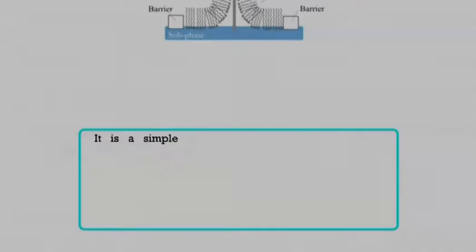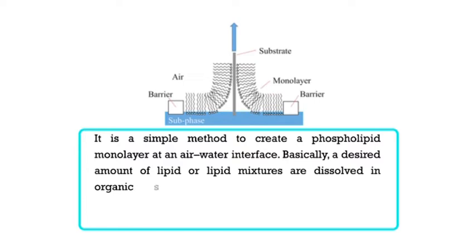It is a simple method to create a phospholipid monolayer at an air-water interface. A desired amount of lipid or lipid mixtures are dissolved in organic solvents such as chloroform or chloroform-ethanol mixtures, formed by spreading the lipid-solvent mixtures on the water surface. By evaporating out the solvent, the phospholipid molecules self-assemble vertically as a monolayer film at the air-water interface, with their hydrophilic head groups immersed in the water and the hydrophobic tail pointed into the air. If the monolayer is composed of a mixture of different phospholipids, then, depending on the structure of the phospholipids, the monolayer could be less or more densely packed.